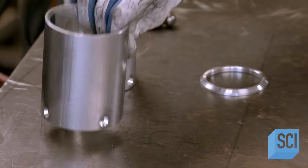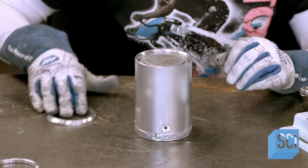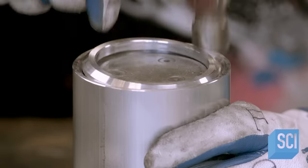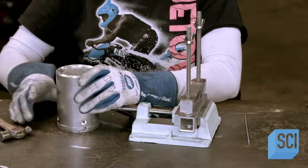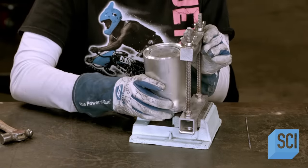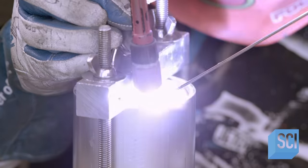To build each jet control nozzle, a worker places a housing on an alignment fixture, then hammers an end cap into position. Holding the housing steady with a clamp, the worker welds on the end cap.